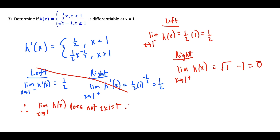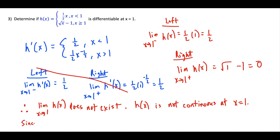Since the left and right limits are not equal, the limit does not exist. There are three conditions for continuity: the limit must exist, the function must be defined, and the limit and function value must be equal. Since the limit doesn't exist, h(x) is not continuous at x equals one. And since h(x) is not continuous at x equals one, it's automatically disqualified from being differentiable.